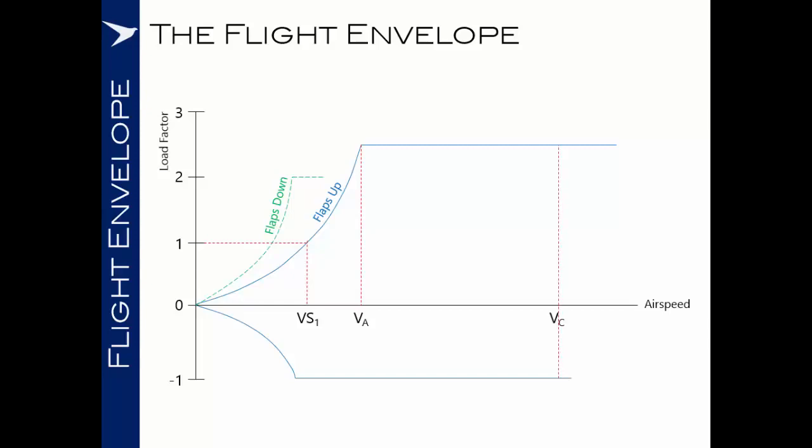The design cruising speed of the aircraft will be somewhere up here in the flight envelope, and the maximum permissible speed of the aircraft will be denoted by VNE and will dictate the right-hand edge of our aircraft here.